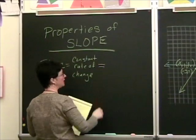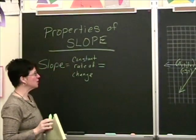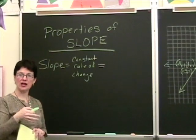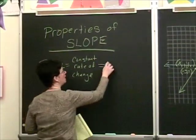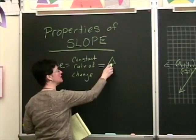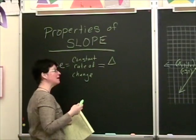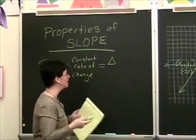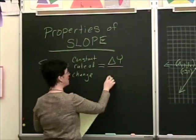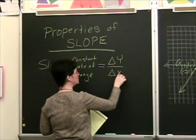Now, symbolically, that is written as the change in the y coordinates compared to the change in the x values. And we symbolize that, we shorten it by using this little triangle, which is a Greek letter, delta, and in math it means the change in. So it's the change in the y coordinates compared to the change in the x coordinates.